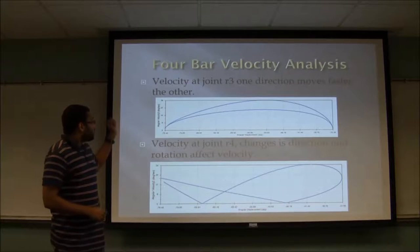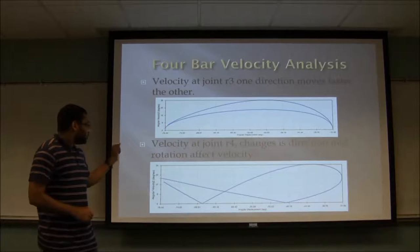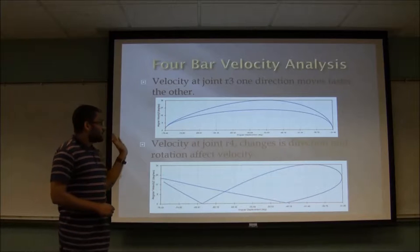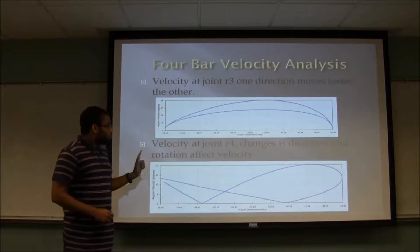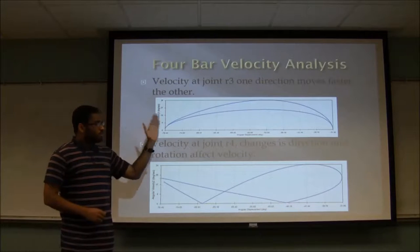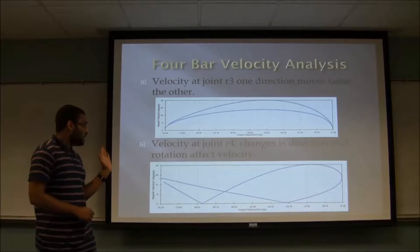For the angular velocity of R3 and the angular velocity of R4, as mentioned before, they go back and forth. As you can see in both arches, it's going faster in one direction and slower in the other.